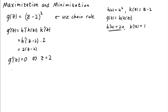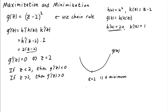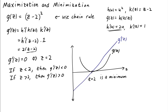We have one critical point. If z is less than 2, the factor z minus 2 is negative, so g prime of z is negative. If z is greater than 2, then g prime of z is positive. So g is first decreasing and then increasing, meaning at z equals 2 we have a local minimum. If you were to plot g of z you would get a parabola, and the derivative would be a line that is negative up to z equals 2 and then becomes positive.